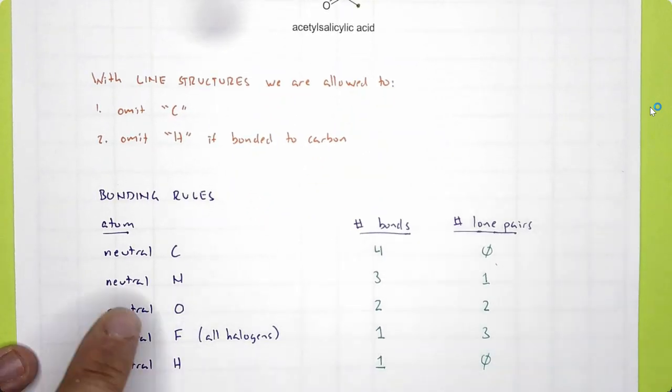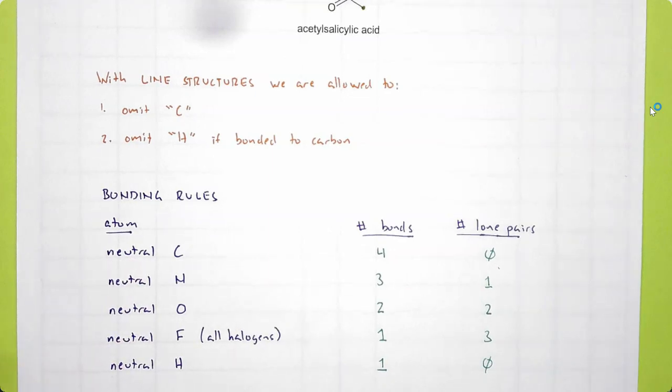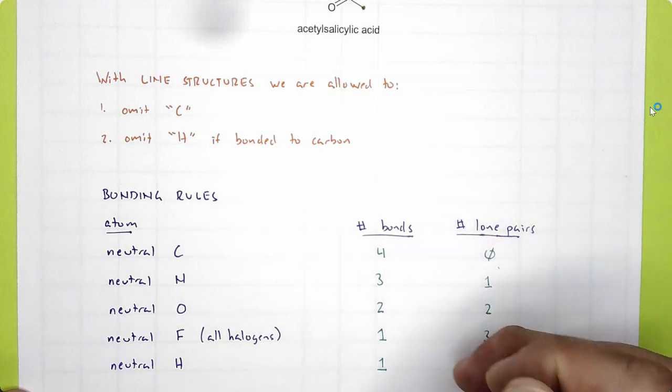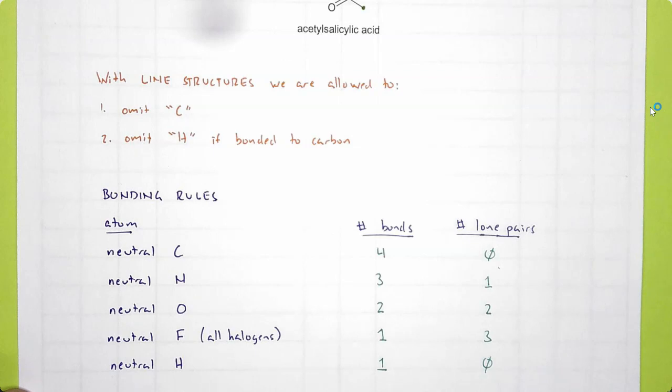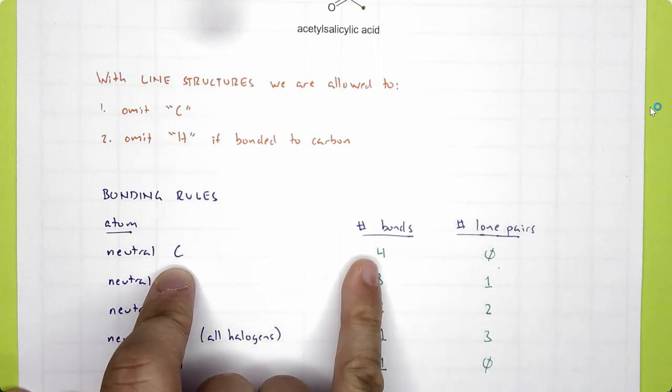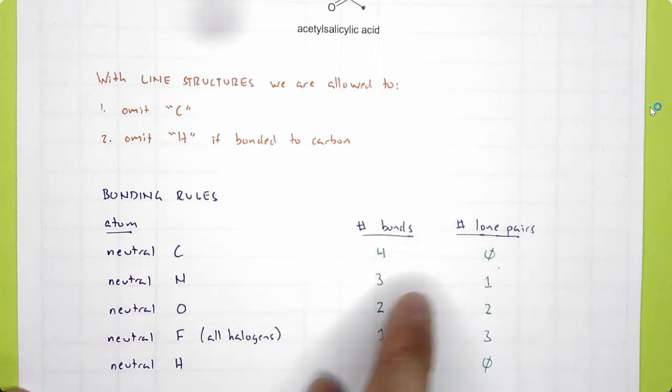These are the bonding rules that you have to know very well. For now, they are all for neutral atoms. We'll go over charged atoms later in a different video. I can explain these rules that result in atoms having a filled valence shell. But that, again, is also for another video. For now, focus on neutral carbon having four bonds, zero lone pairs, oxygen having two bonds and two lone pairs, and hydrogen one bond, zero lone pairs.